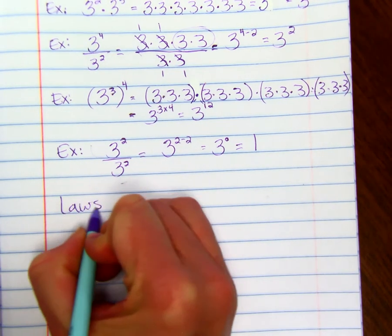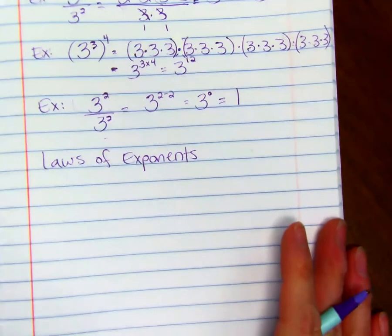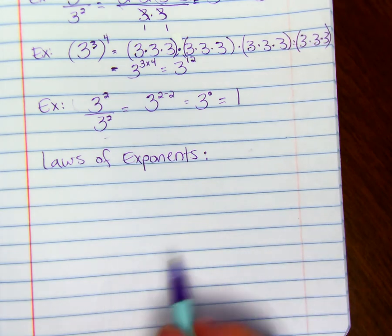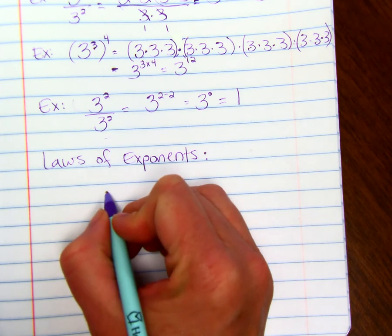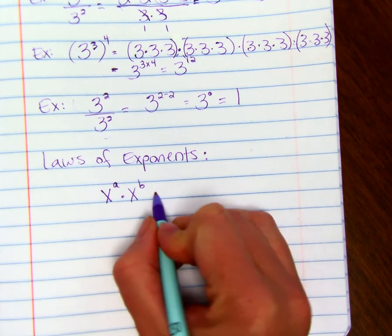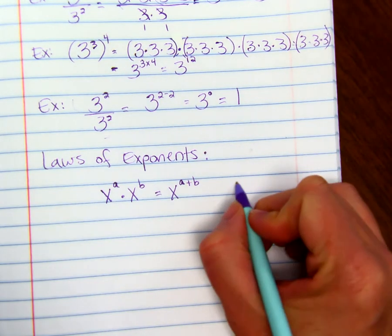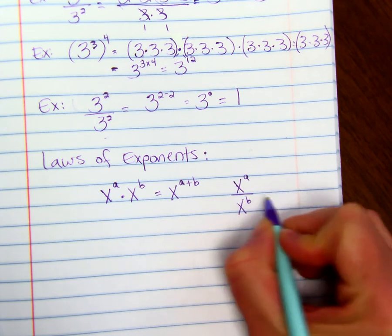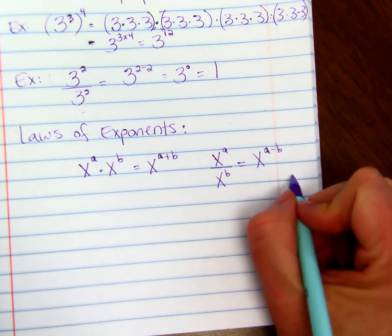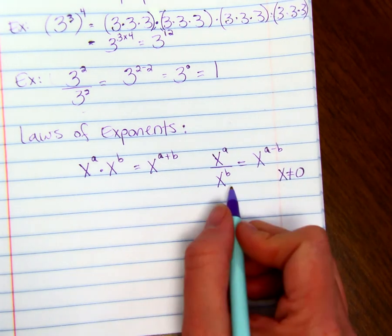So here are some laws of exponents. I did not print out a sheet for you to put in your reference, but you might want to recopy this back in the reference section. You will probably look at it quite often. So if we have the same base, and we are multiplying with different exponents, we just add the exponents and keep the same base. If we are dividing x to the a divided by x to the b, we subtract exponents. And this is as long as x does not equal 0.